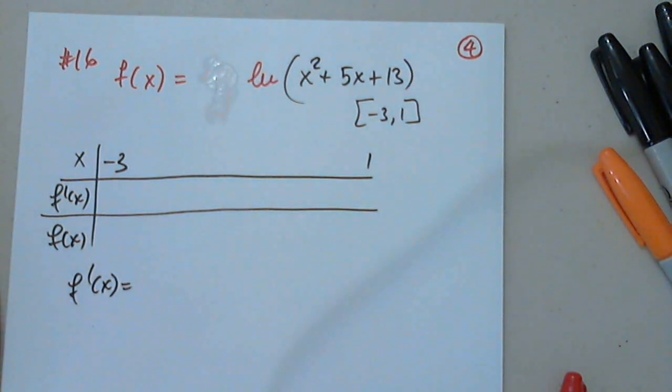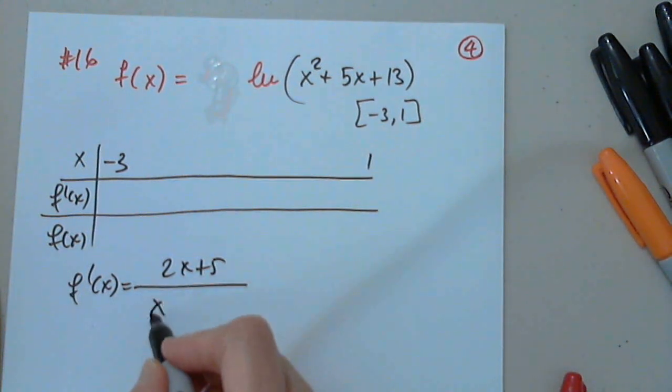Can anyone give us the derivative of natural log of x squared plus 5x plus 13? I got 2x plus 5 over x squared plus 5x plus 13. Of course.